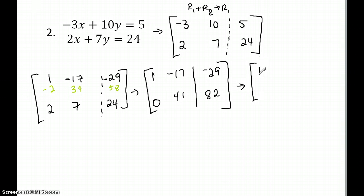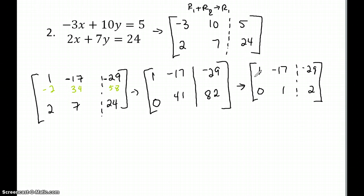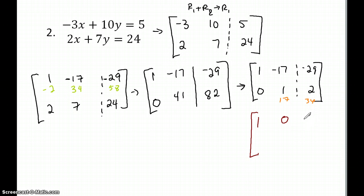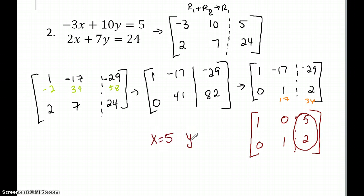Forty-one and eighty-two divide out nicely, so I divide both by forty-one. That gives zero, one, two. Now the matrix is one, negative seventeen, negative twenty-nine and zero, one, two. To eliminate the seventeen, I multiply the bottom row by positive seventeen and add to the top row. Adding gives one, zero, five for the top row. Bottom row stays the same: zero, one, two. So x equals five, y equals two, or in an ordered pair: five comma two.